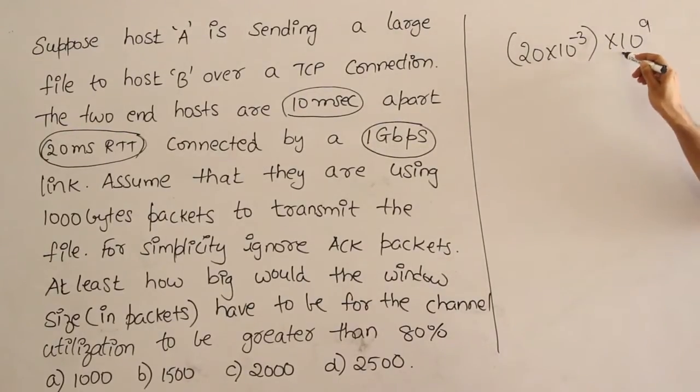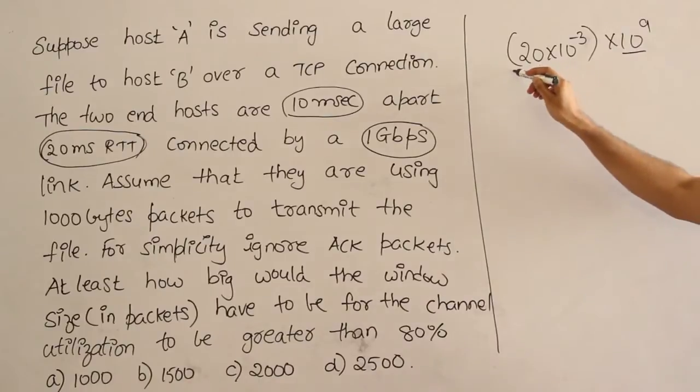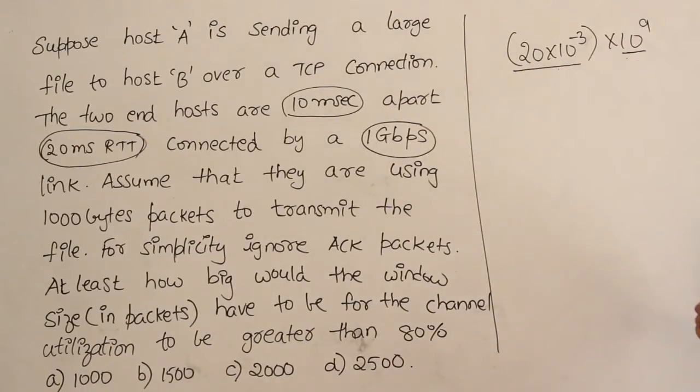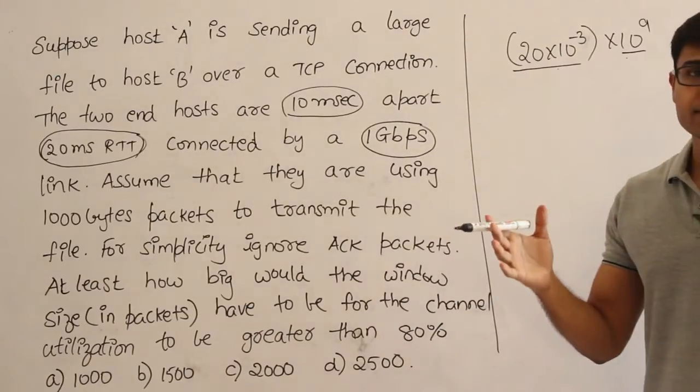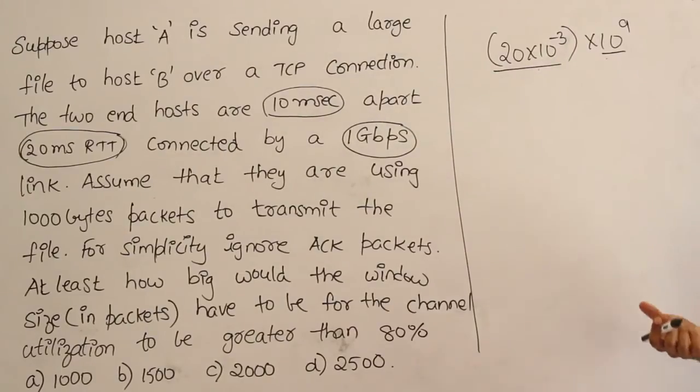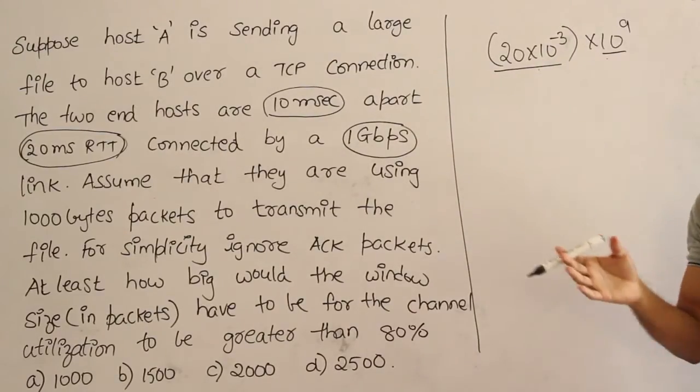So if the bandwidth is 1 Gbps which is 10 power 9 and if round trip time is this much, then round trip time multiplied with bandwidth will give me the maximum bits I could send in 1 RTT. If I have to send these many bits in 1 RTT then I should have that much big window, isn't it?